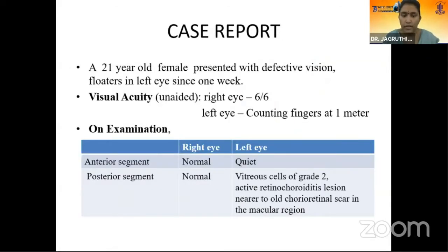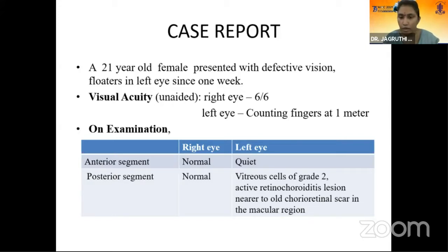Case report. A 21-year-old female presented with defective vision and floaters in the left eye since one week. Her unaided visual acuity on the day of presentation is 6/6 in the right eye and counting fingers at 1 meter in the left eye, having no improvement with pinhole. On examination, her right eye was normal. In the left eye, the anterior segment was quiet and posterior segment showed vitreous cells of grade 2 and active retinochoroiditis adjacent to an old chorioretinal scar in the macular region.